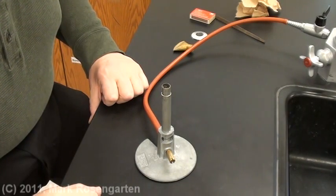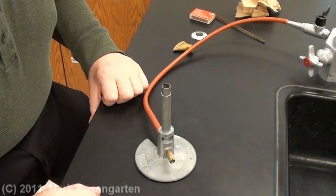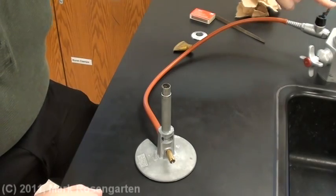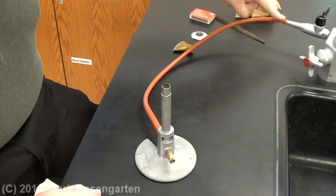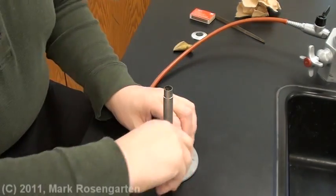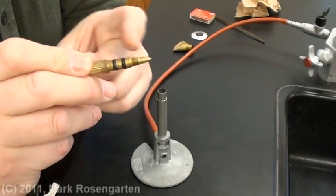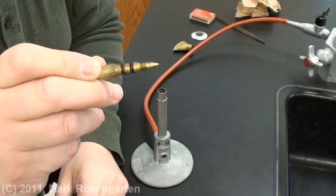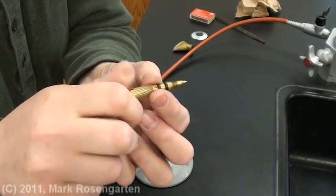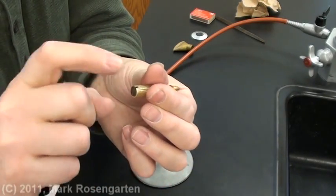This is a Bunsen burner. It's used for heating things up in the laboratory. The source of gas comes in right here, travels along this tube where it's stopped by a piece called the needle valve. These gaskets prevent gas from actually entering the burner until you loosen the gas control knob.